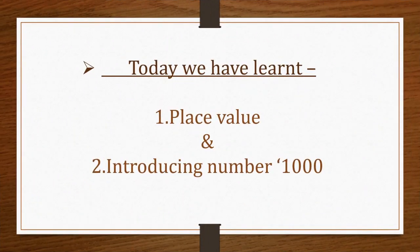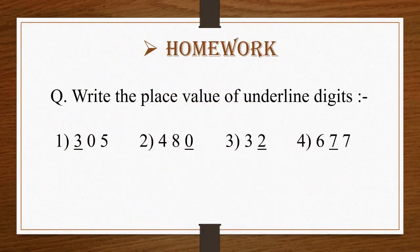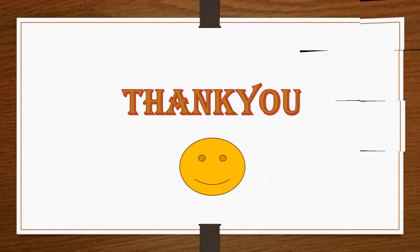So students, today we have learnt two subtopics from number work — the last part of number work: place value and introducing the number 1,000. Now homework time: write the place value of underlined digits. You have to write it down in your notebook. Thank you.